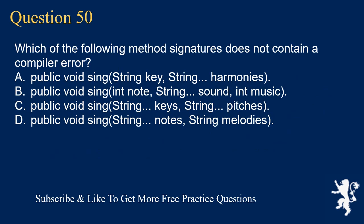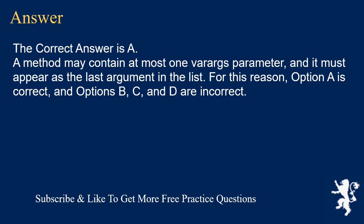Question 50. Which of the following method signatures does not contain a compiler error? A. public void sing(String key, String... harmonies). B. public void sing(int note, String... sound, int music). C. public void sing(String... keys, String... pitches). D. public void sing(String... notes, String melodies). The correct answer is A. A method may contain at most one varargs parameter, and it must appear as the last argument in the list. Option A is correct, and options B, C, and D are incorrect because they violate this varargs rule.